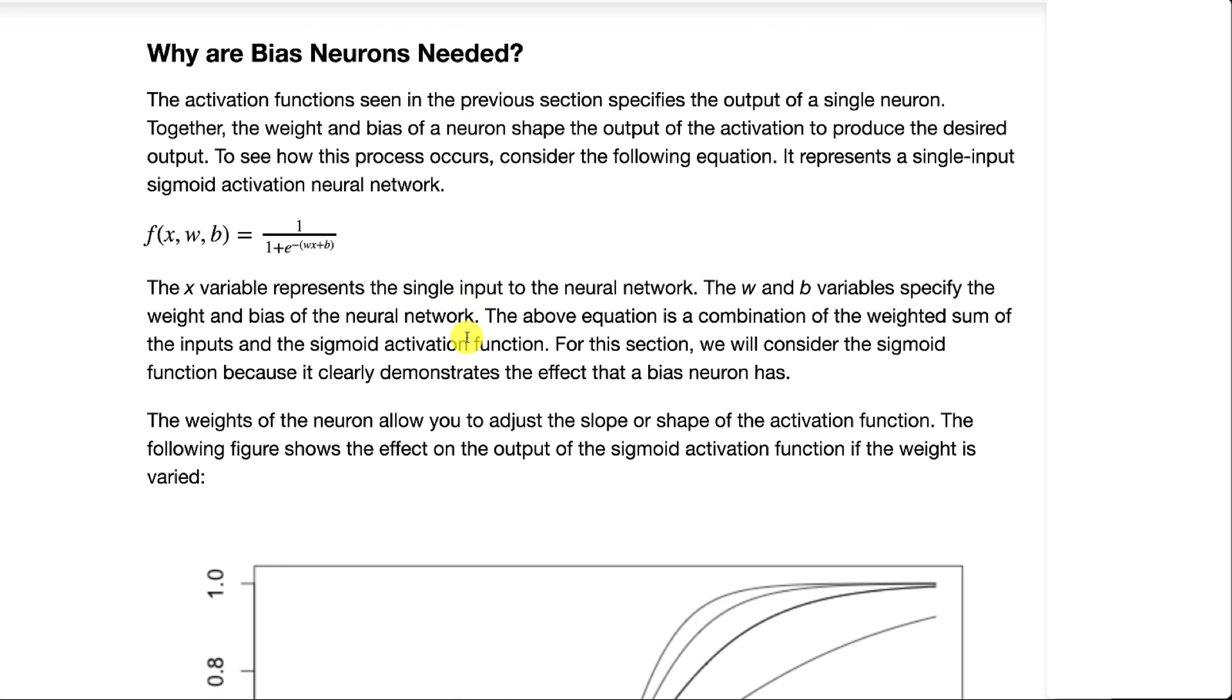We'll look at why bias neurons are needed. Essentially they are the intercept, like when you previously worked with y = mx + k linear equations.